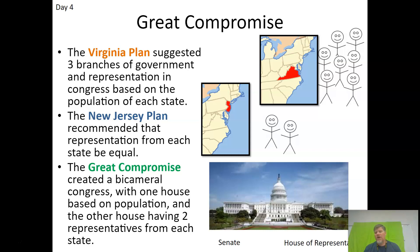One significant thing about the Northwest Ordinance is that it forbids slavery in those territories. After the Articles of Confederation, they came together for a Constitutional Convention. James Madison, the Father of the Constitution, came with a plan called the Virginia Plan. He created three branches of government — legislative, executive, and judicial — and proposed that representation in Congress would be based on population, in both the House and Senate.